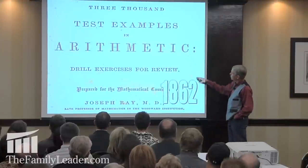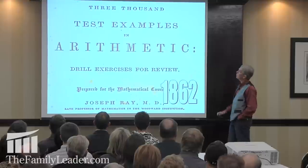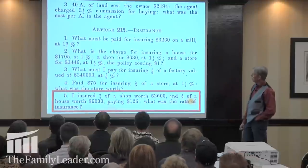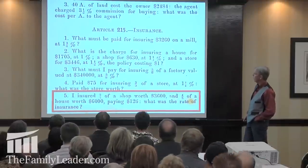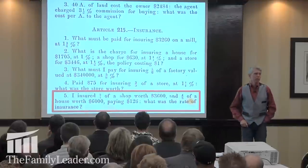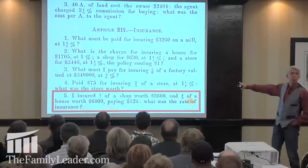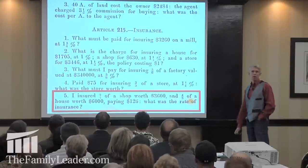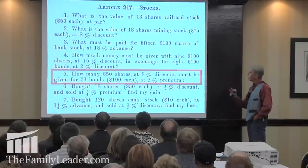And here's arithmetic from 1862 — elementary math, problems before the sixth grade. Take this one: 'I insured two-thirds of a shop worth $3,600 and four-fifths of a house worth $6,000, paying $126. What was the rate of insurance?' That's basic pre-sixth-grade math for every public school kid in America prior to 1960. And this one: 'How many $50 shares at 80% discount must be given for 23 bonds of $100 each at 2% premium?' Every elementary kid in America could work that problem.